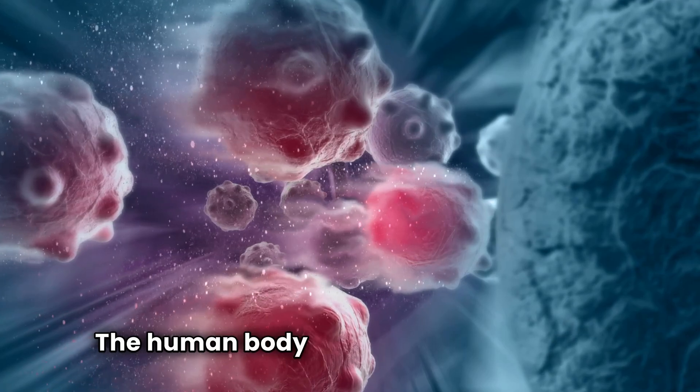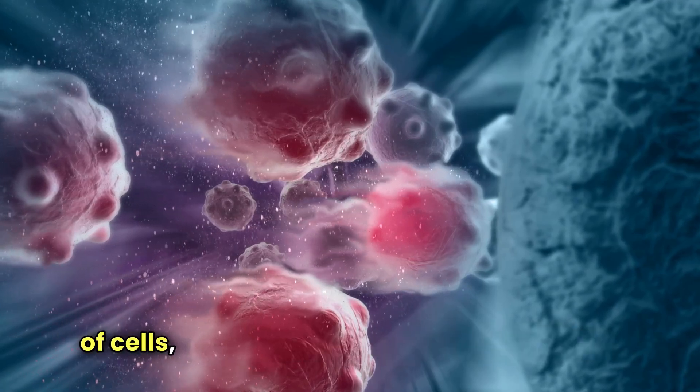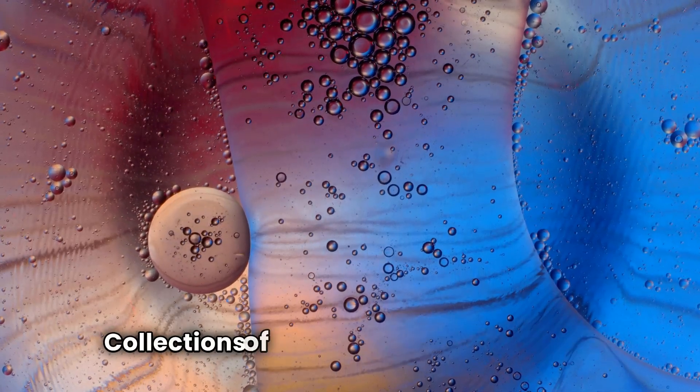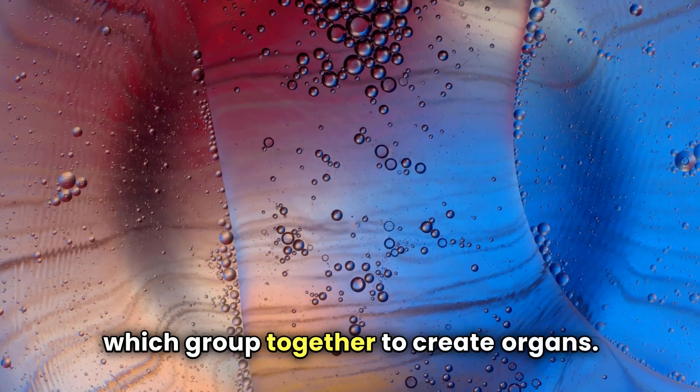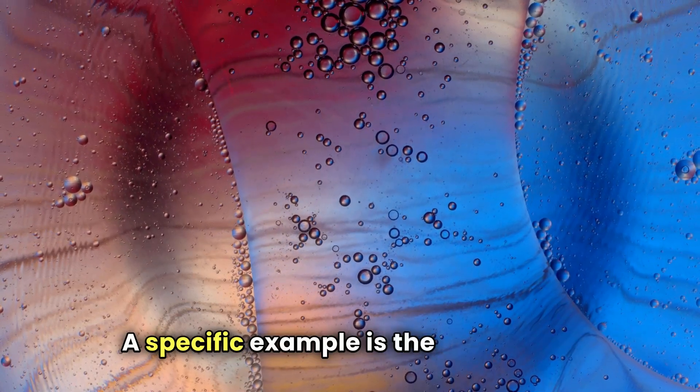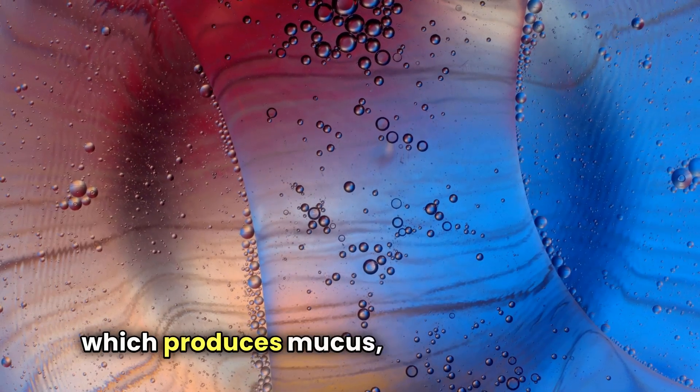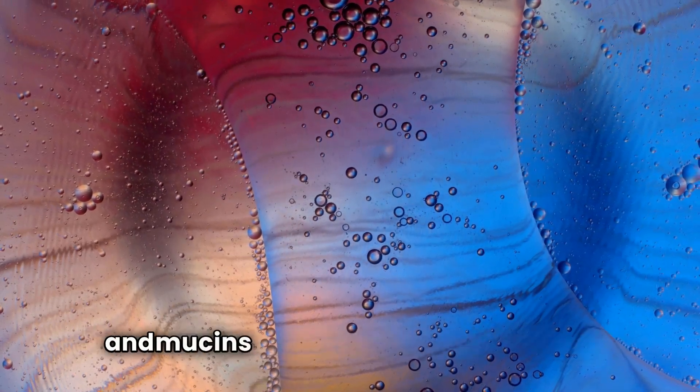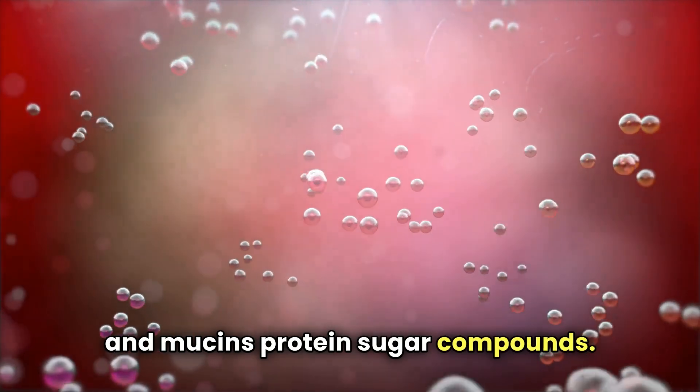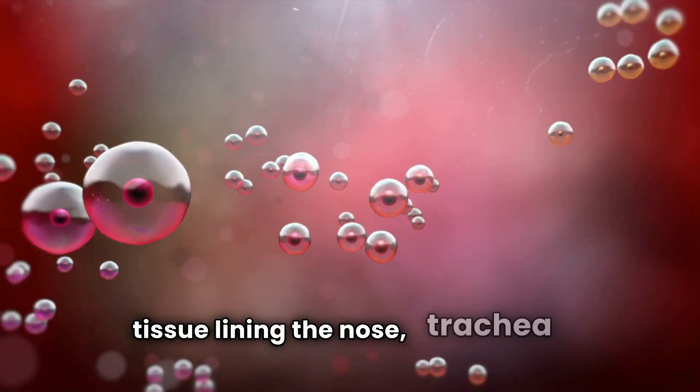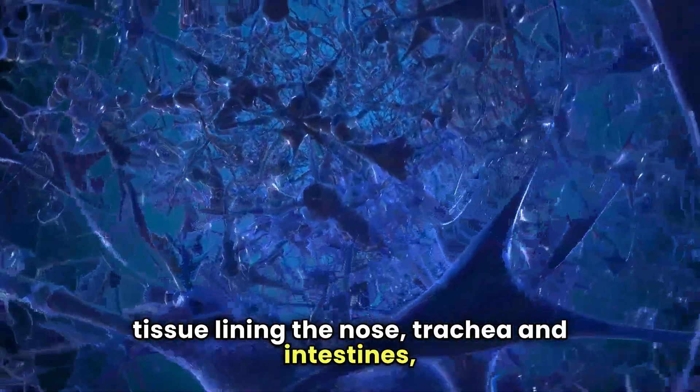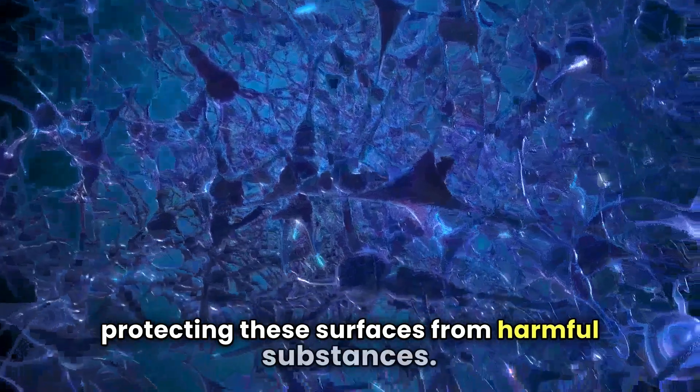The human body is composed of trillions of cells, each performing unique functions. Collections of similar cells form tissues, which group together to create organs. A specific example is the goblet cell, which produces mucus, a mixture of water and mucins, protein-sugar compounds. These cells are part of the epithelial tissue lining the nose, trachea, and intestines, protecting these surfaces from harmful substances.